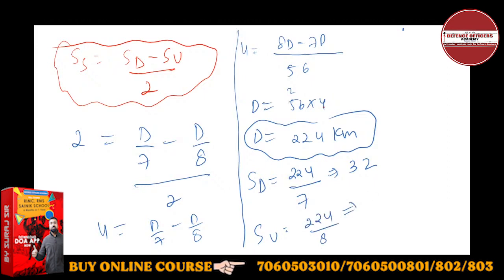So 224 divided by 8 equals 28. The speeds are 32 kilometers per hour and 28 kilometers per hour respectively. Now you have to find the speed of boat. You have all the information now and all the formulas.